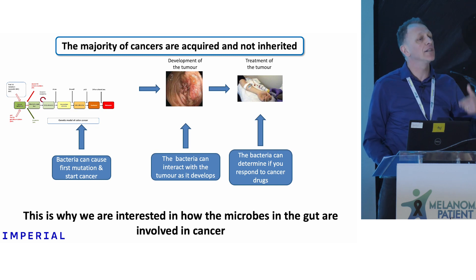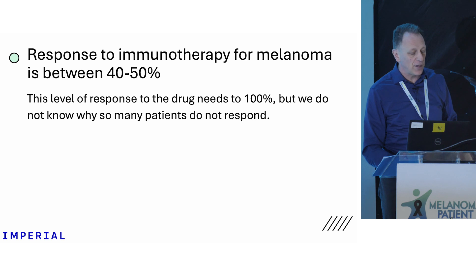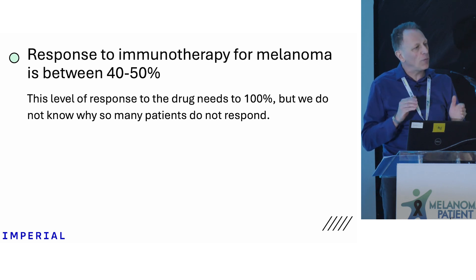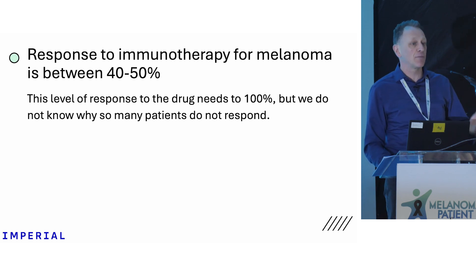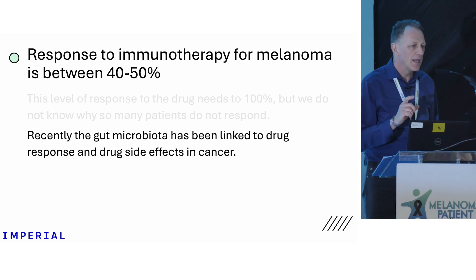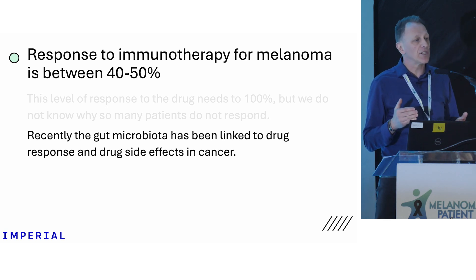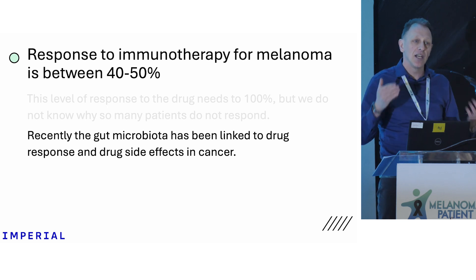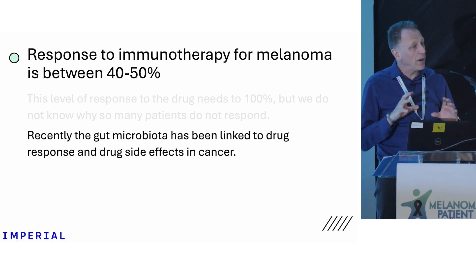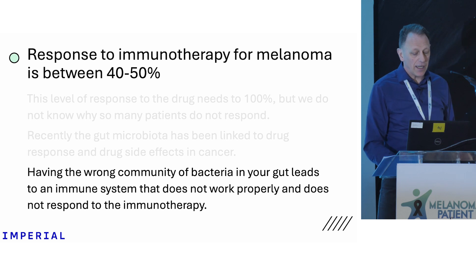We're starting to see how this maps out to melanomas, pancreatic cancer, lung cancer, and other cancers — especially the immunotherapy cancers. In melanoma, we know that the response rate is not 100%; it's between 40 and 50%. What is stopping us getting to 100%? One thing we're seeing is that the gut microbiota — what lives in your large intestine — is causing an influence on how you respond to immunotherapy, and also the side effects: one of the most common is dermatitis and colitis, then hepatitis. Having the wrong community of bacteria in your gut leads to an immune system that does not respond properly to immunotherapy.